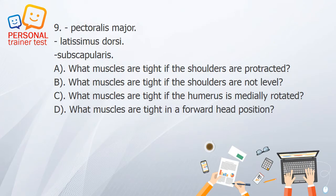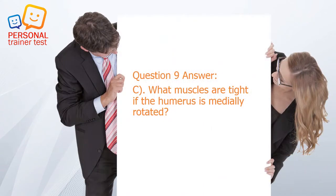Question 9. A. What muscles are tight if the shoulders are protracted? B. What muscles are tight if the shoulders are not level? C. What muscles are tight if the humerus is medially rotated? D. What muscles are tight in a forward head position? Answer: C. Pectoralis major, latissimus dorsi, and subscapularis are tight if the humerus is medially rotated.